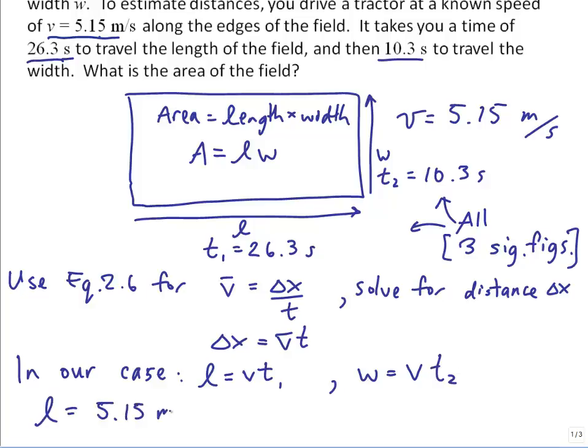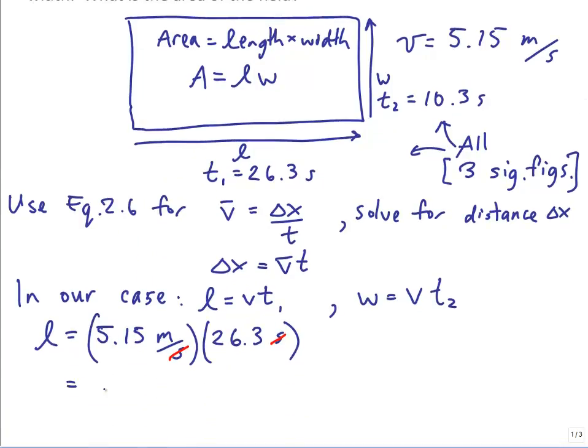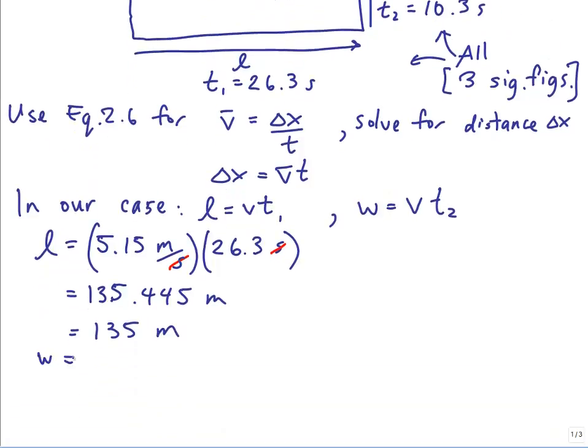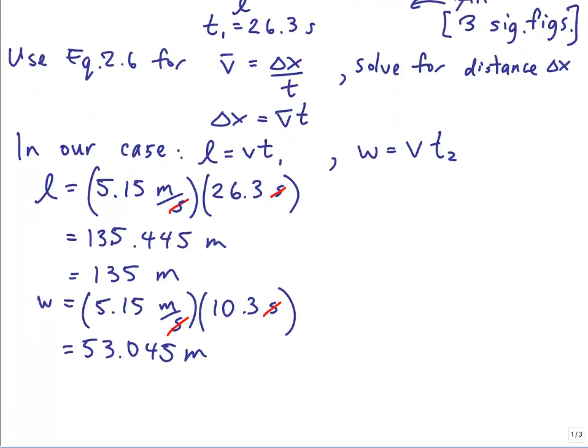So those are our equations. We'll just work it out. L is 5.15 meters per second times 26.3 seconds. Seconds cancel. You get, on my calculator, 135.445 meters. Round that to three significant figures: 135 meters.